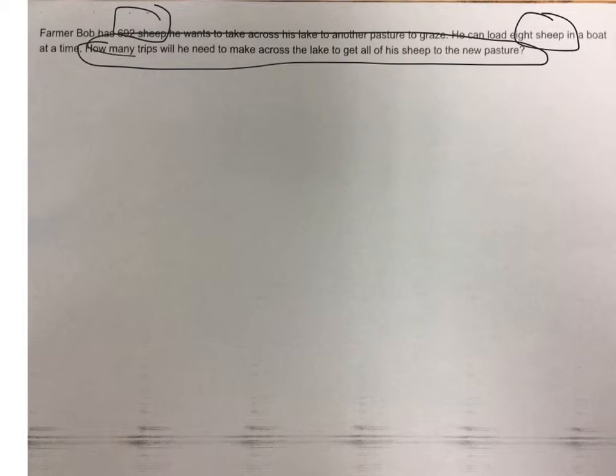First, we need to underline the important information. 692 sheep and 8 sheep in a boat and the question. Now, we need to draw the Big 7.